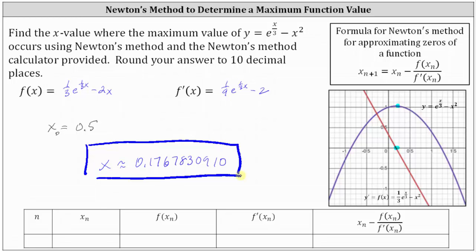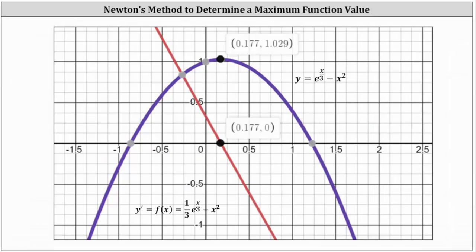Before we go, let's take a look at this graphically. The graph will only show our solution to three decimal places, but we used Newton's method to approximate the zero of the derivative function — the x-intercept of the red curve, which is the derivative of the given function graphed in purple. Notice how this gives us the location where the original function has a maximum value, which is approximately 1.029. Our question was to find the location, which to three decimal places is approximately 0.177. I hope you found this helpful.